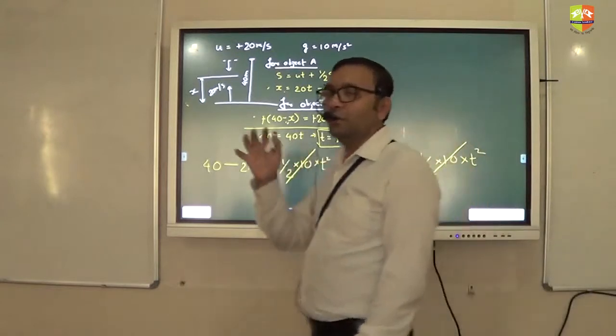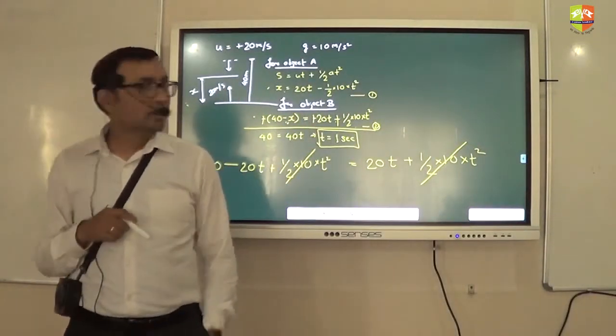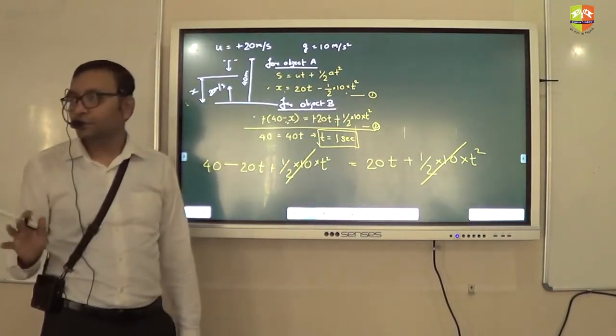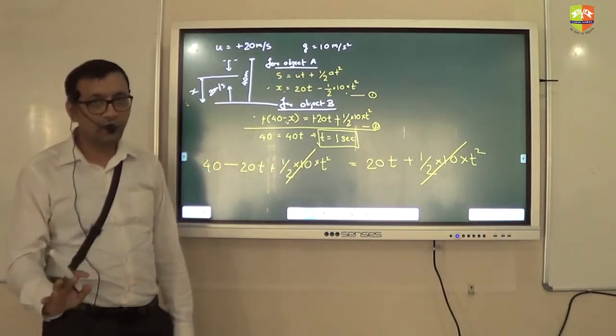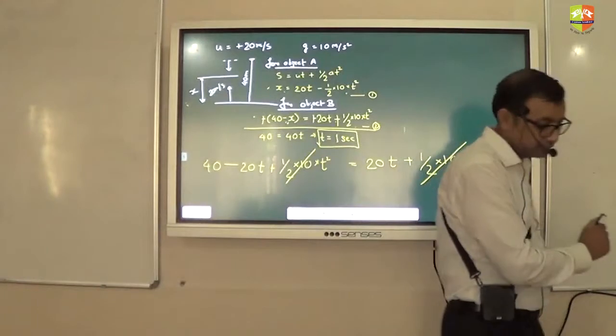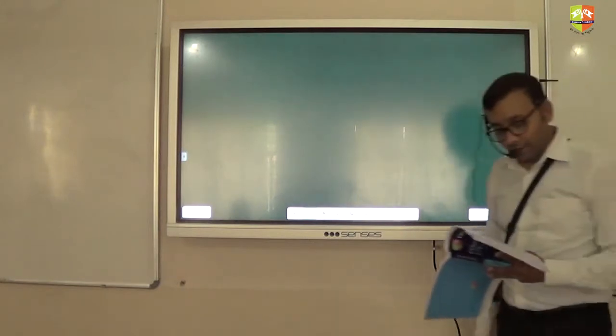So now you get t = 1 second. How you get x now? Substitute t = 1 second there, you get x. Understood? All of you understood, right? What next? Next question. 33. I just had to substitute now. 33. Please read question number 33. I will move on to the next slide.